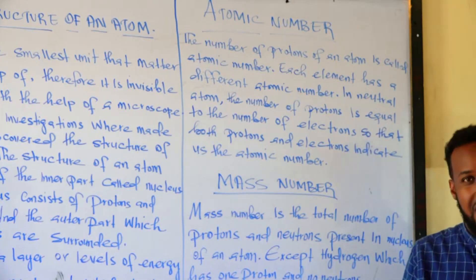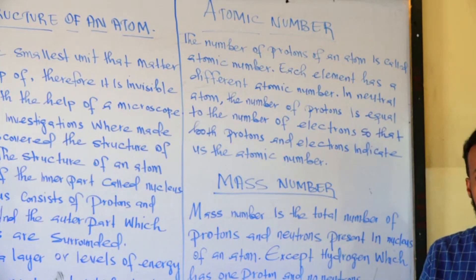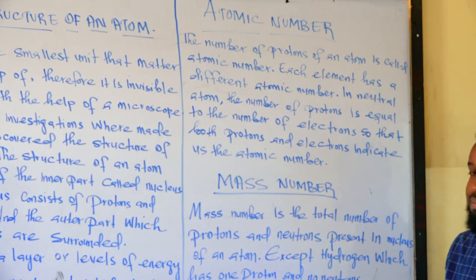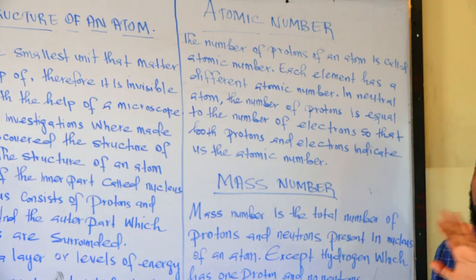For example, hydrogen, helium — these elements each have their own atomic number.